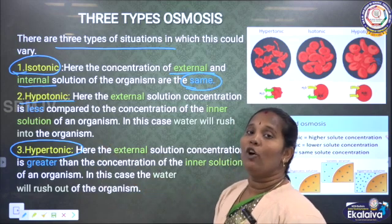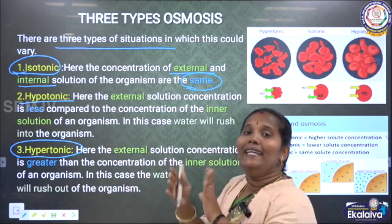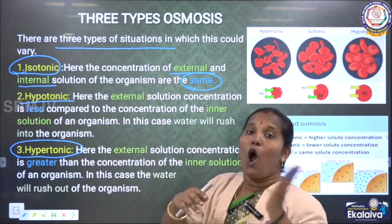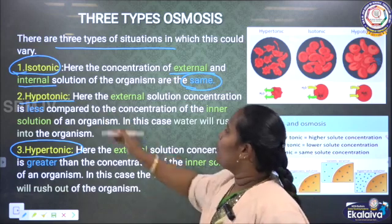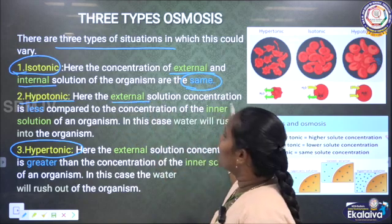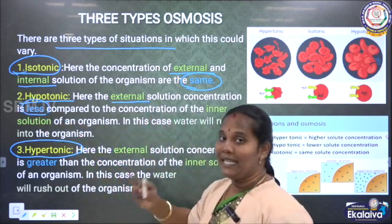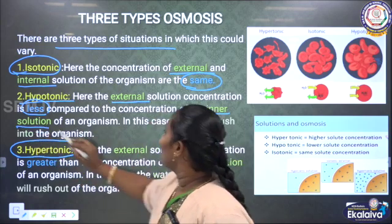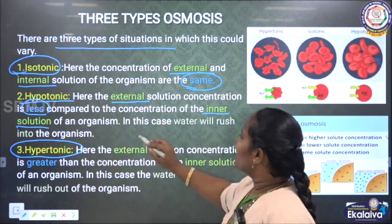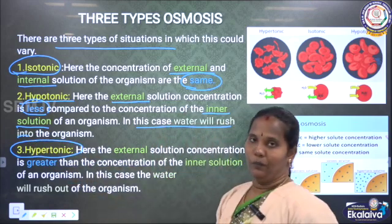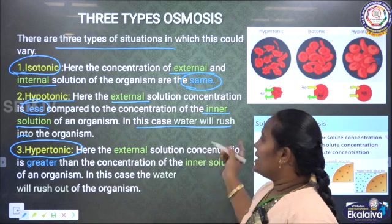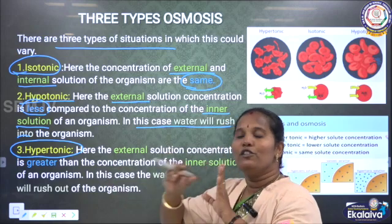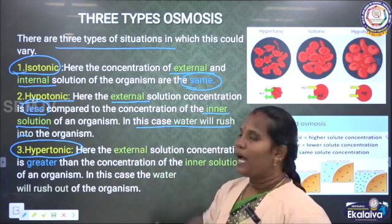What is hypotonic? Hypotonic means the internal cell concentration is high compared to the outside of the cell. The external solution concentration is less, but the internal solution of the organism is high. So in this case, water will rush into the organism — a high level of concentrated water rushes inside. This is the hypotonic level.